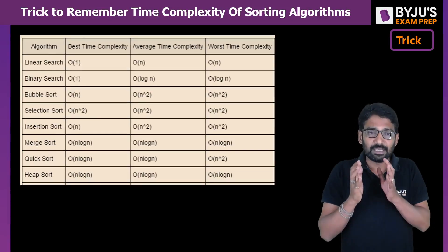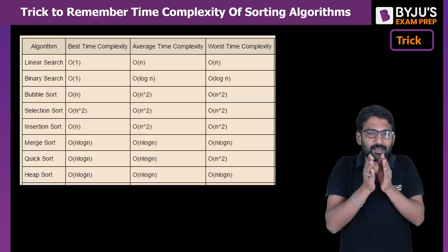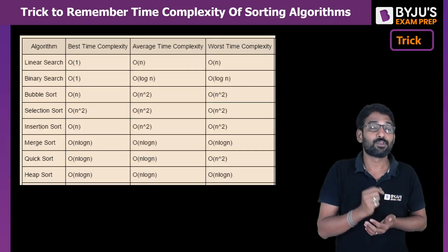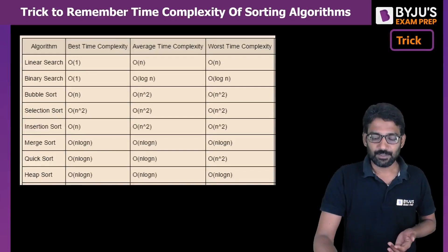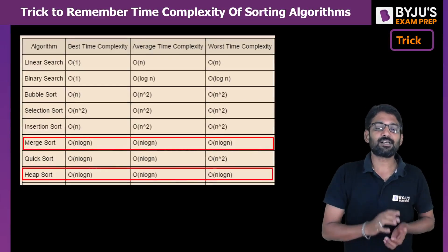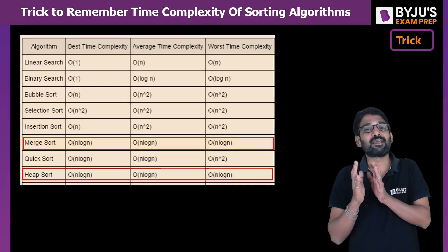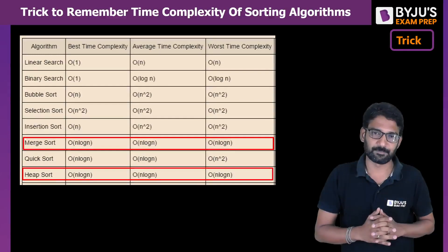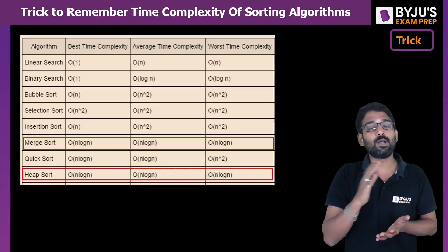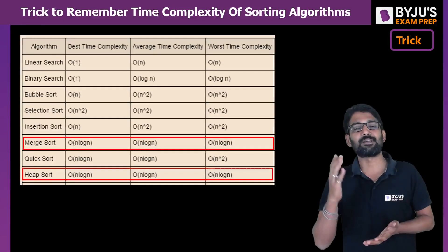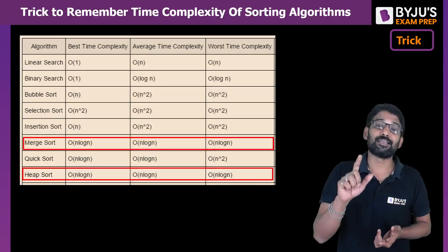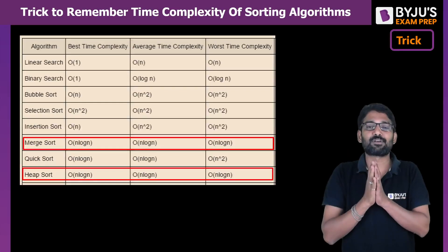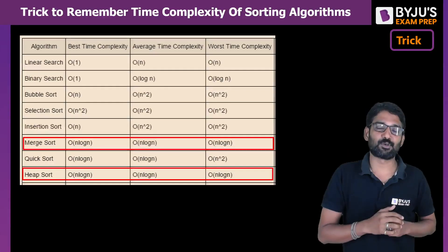If you keep an eye and analyze for a few seconds, you will realize that merge sort and heap sort have the same time complexity — in all cases, best case, average case, and worst case, it is O(n log n). So merge sort and heap sort both have n log n time complexity.